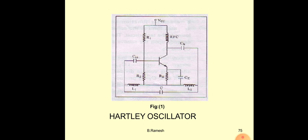Coupling capacitors couple the feedback voltage to the base terminal. R1 and R2 resistors provide proper biasing. Without proper biasing, you cannot make the transistor operate in the active region, so it cannot amplify the input signal. To make the transistor act as an amplifier, we must apply proper bias. The RE resistor provides stability, and the bypass capacitor provides a low reactance path to RE.